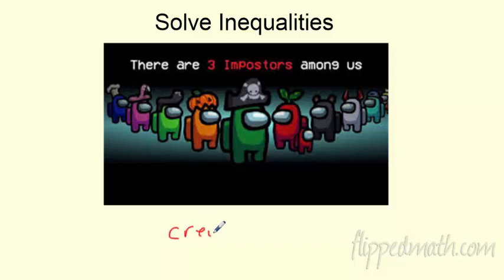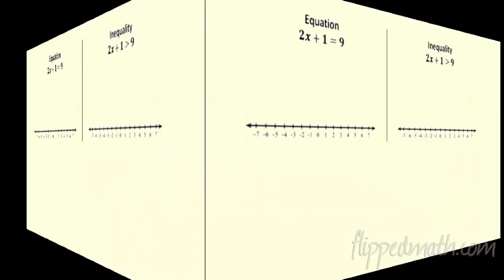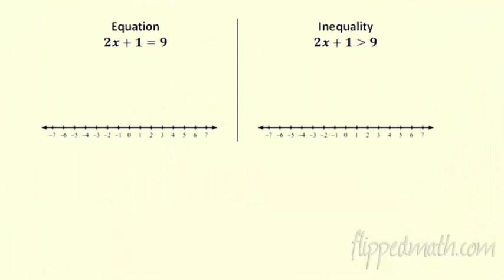When you start, your crewmates are always greater than the imposters. No matter how you set it up, you're going to have more crewmates than imposters. And then you slowly chip away at those crewmates if you're good imposters and whatnot. So we're going to solve some inequalities, figure out how many crewmates are left and whatnot.